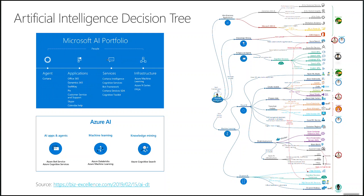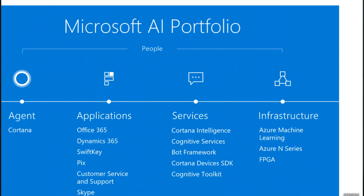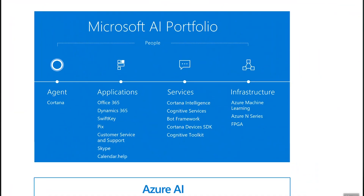Here you can see that the Microsoft AI portfolio contains not only services usually covered during discussions about machine learning, and not only infrastructure, but also business applications and things like Cortana personal agent.